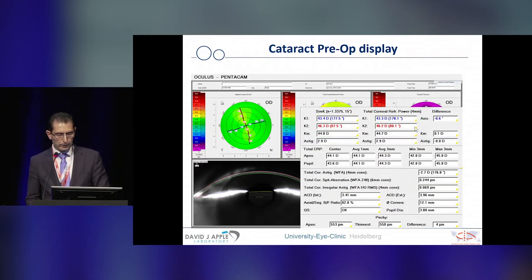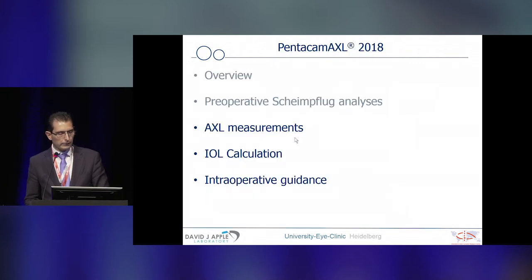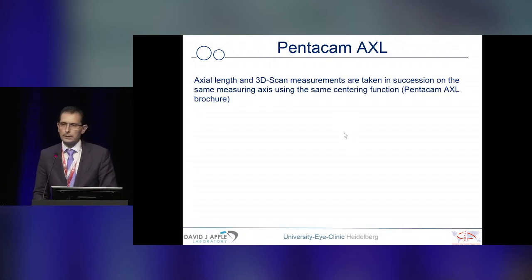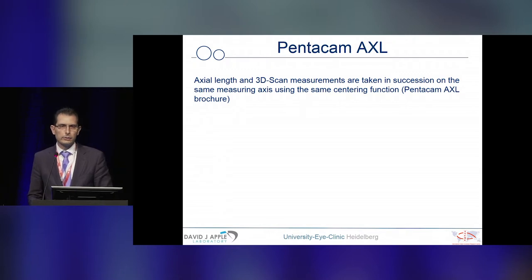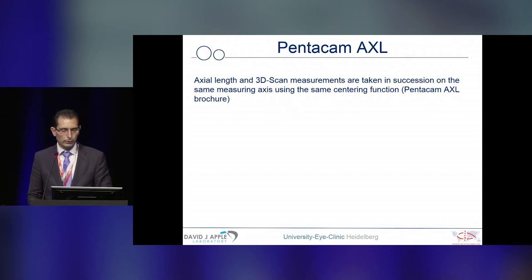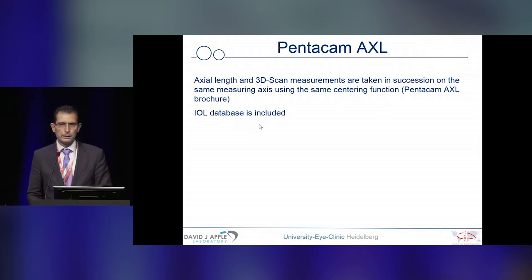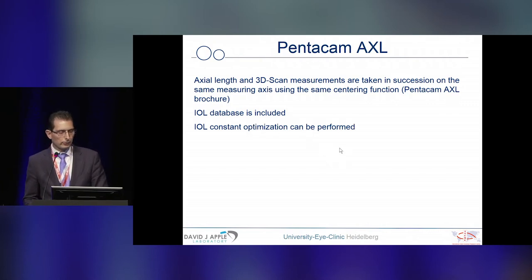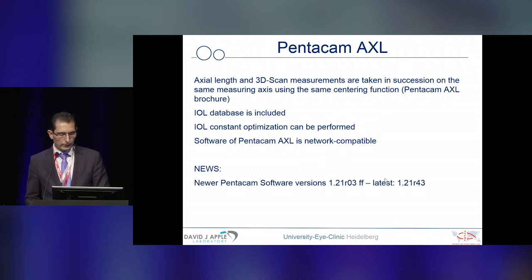This is the summary of this magnified image where you can see all actual axial length measurements, as Professor Cohen already showed us. The new feature in the machine is that the axial length measurements and anterior segment imaging with the Scheimpflug technology are taken along the same measurement axis, so both images can be matched together for a reliable calculation. The IOL database of all currently available CE-marked lenses is included, and you can perform constant optimization for up to 25 surgeons at your site with the current software.